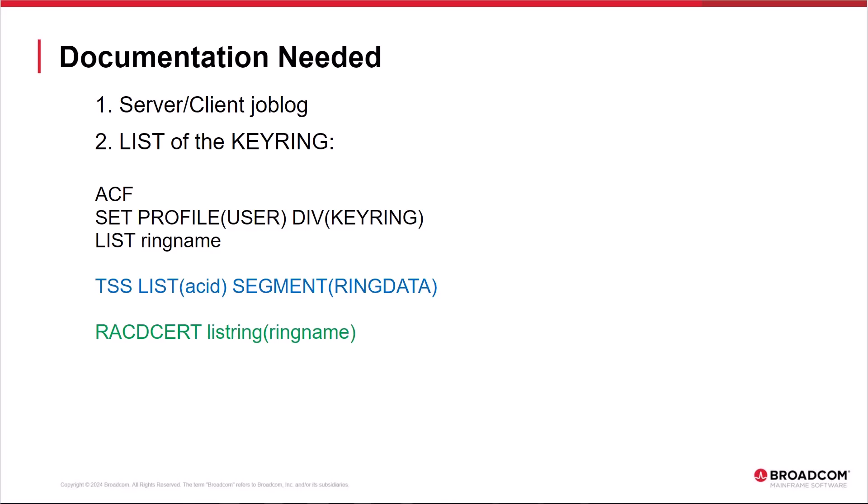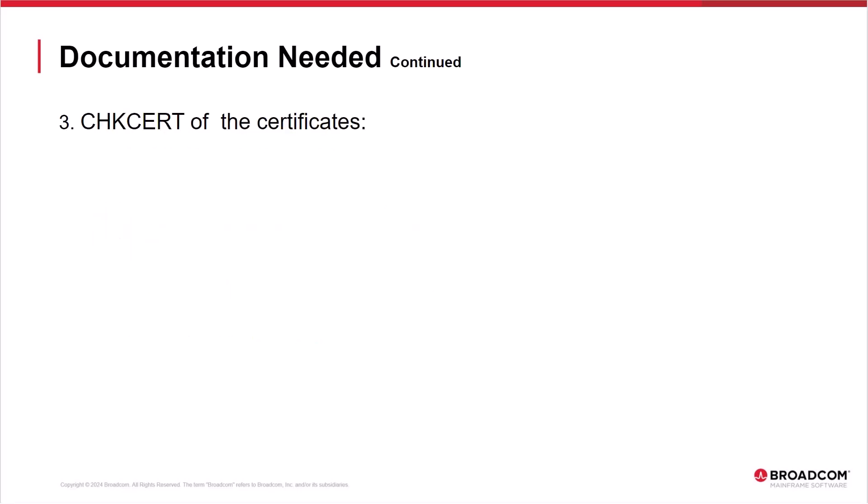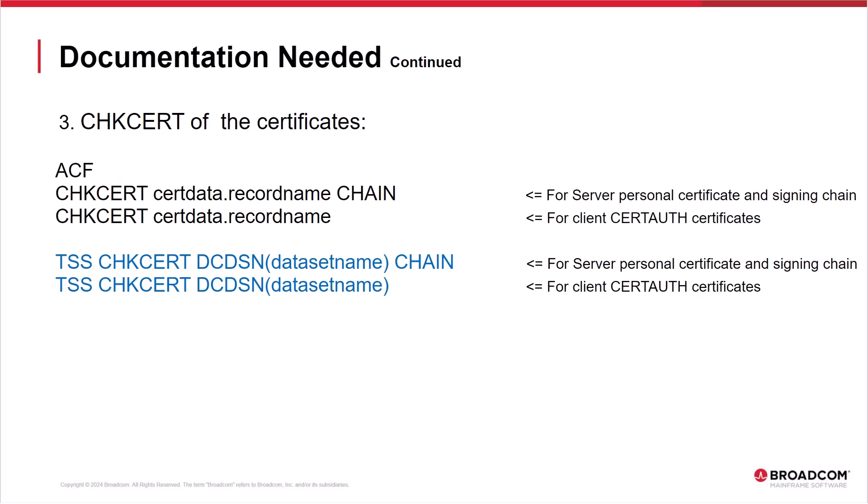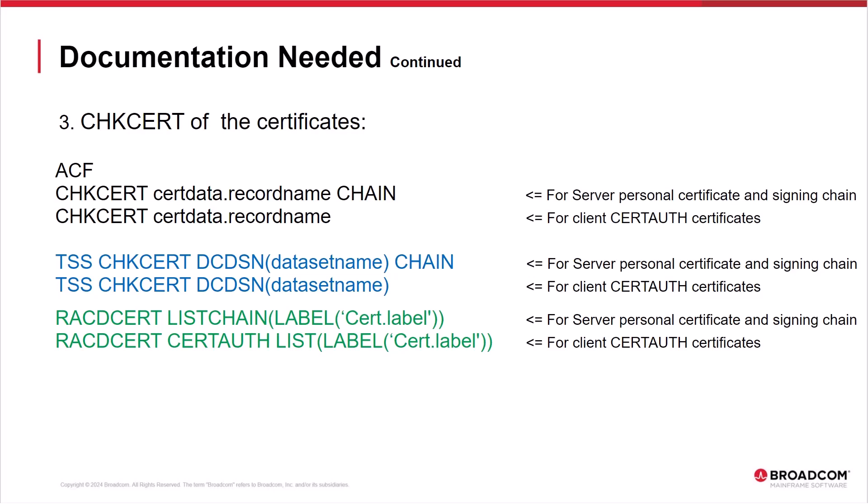To resolve SSL connection failures, here is the required documentation. First is the complete server or client job log showing any messages related to the connection failure. Second is the list of the key ring — here are the ESM commands that can be used to list the key ring. Third, for a server the CHECKCERT CHAIN command can be used to verify the certificate status and keys as well as the signing chain of the personal certificate; for a client the CHECKCERT command verifies the certificates in the key ring. Here are the ACF2 and Top Secret CHECKCERT commands for either the server or client key ring certificates. Note that for Top Secret the CHECKCERT must be done against a TSS data set containing a PKCS7 package of the personal certificate. RACF uses the RACDCERT LIST CHAIN and LIST commands to check certificates. The fourth piece of documentation needed is the ESM resource security report, which verifies that the server or client task has the authority to access the key ring and the private key of the personal certificate.